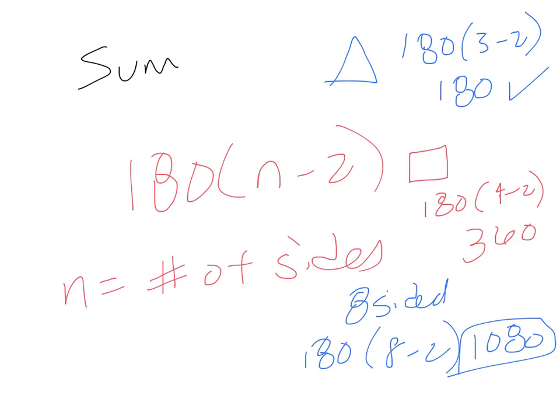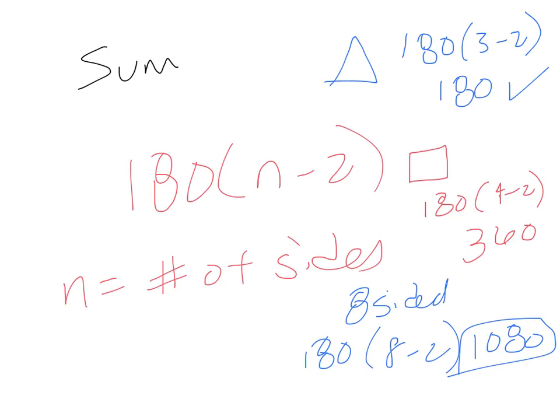Now, going to the next page, we're going to discuss another. The next formula deals with each angle in a regular pentagon. The way you would find that would be 180 times n minus 2, which is technically the sum, and then you're going to divide that by n.